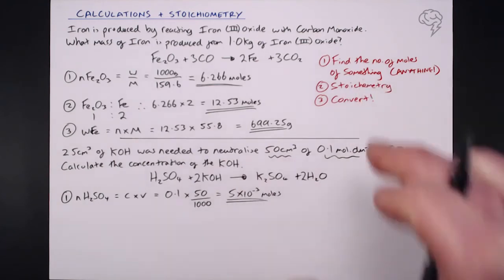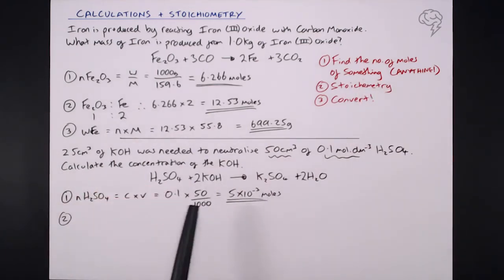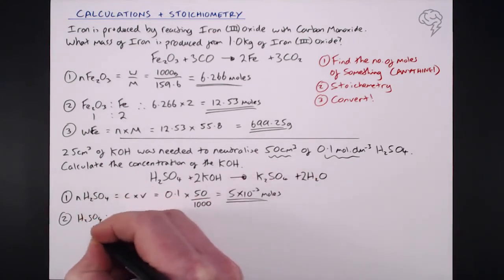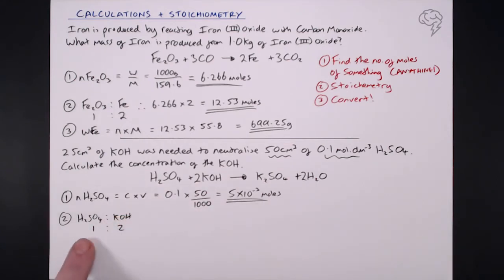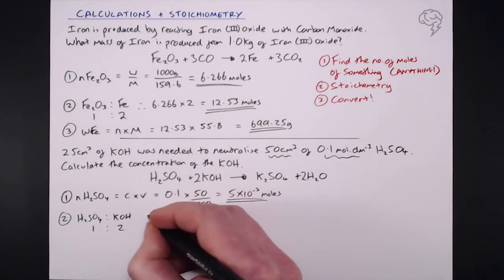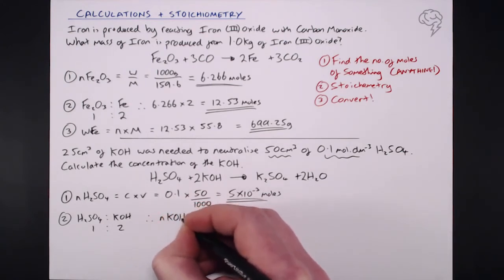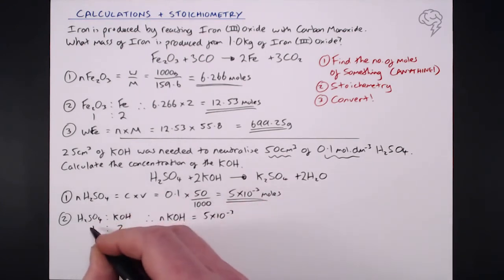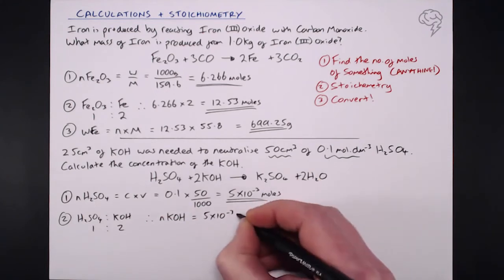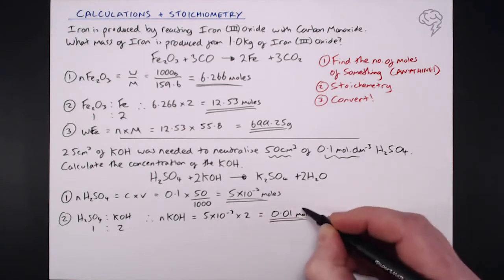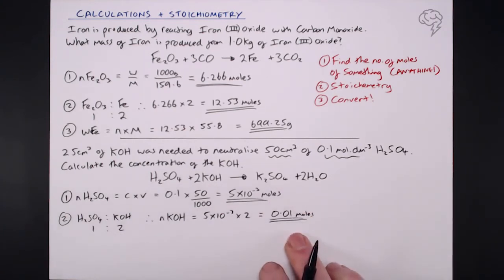Step two, stoichiometry: H2SO4 is in a 1:2 ratio with potassium hydroxide, so one mole of H2SO4 reacts with two moles of KOH. Therefore, the number of moles of potassium hydroxide = 5 × 10⁻³ × 2 = 0.01 moles.